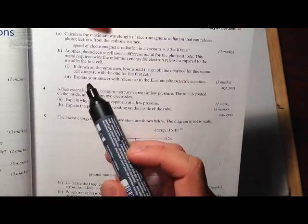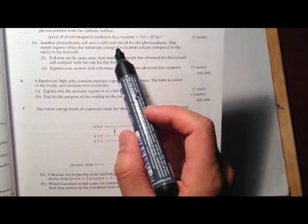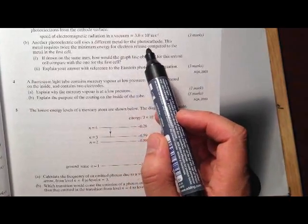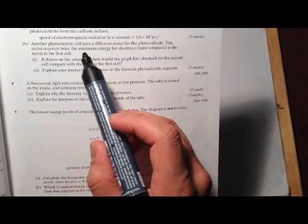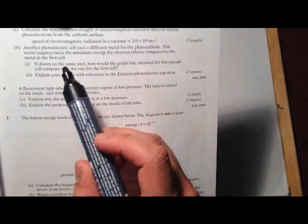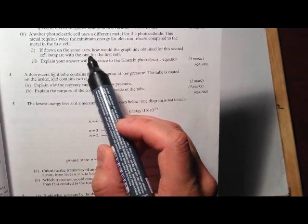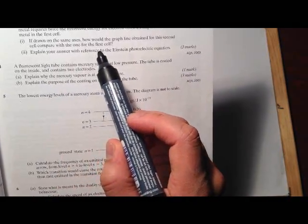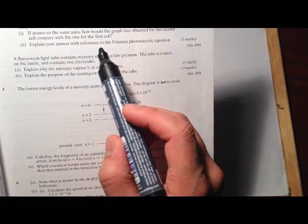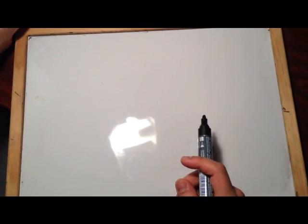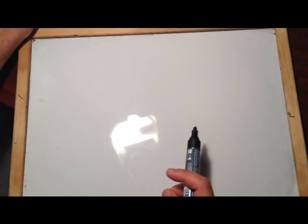Okay Ashes, so it says here, another photoelectric cell uses a different metal for a photocathode. This metal requires twice the minimum energy for the electron released compared to the metal in the first cell. If drawn on the same axis, how would the graph line obtained for the second cell compare with the first cell? And number two, explain your answer with reference to Einstein's photoelectric equation. Okay, so what we need to do is talk about the graph.